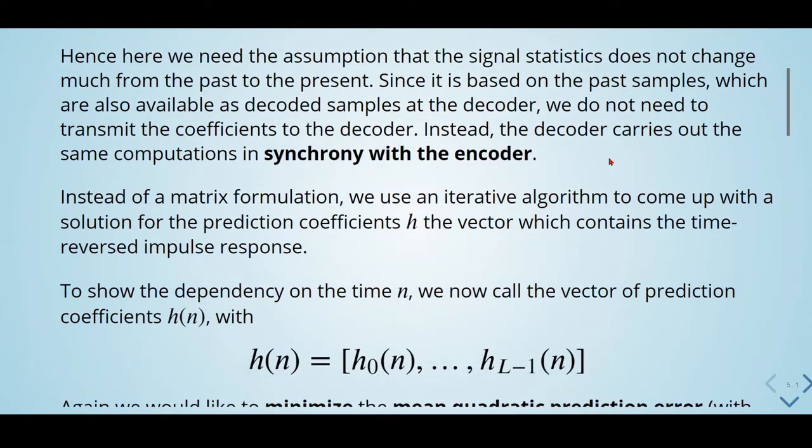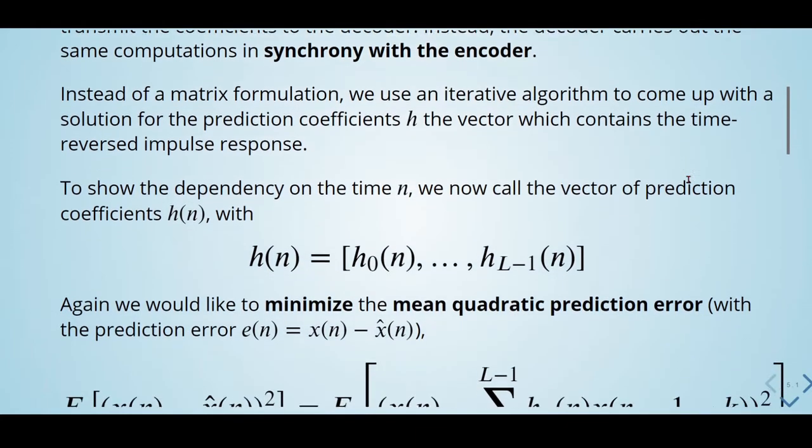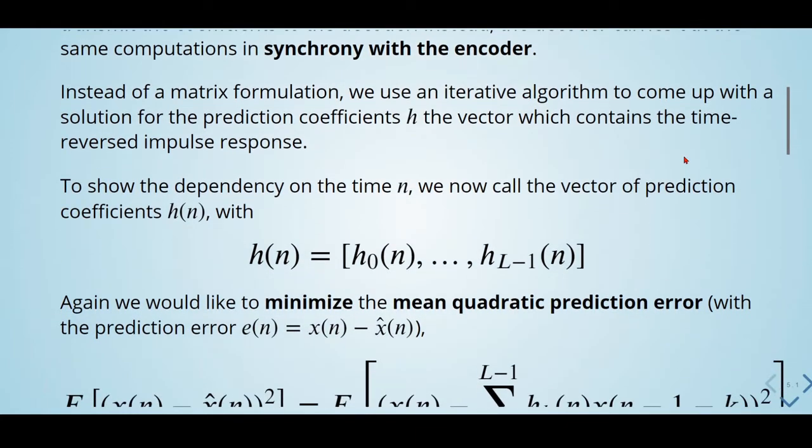Instead of a matrix formulation, we use an iterative algorithm to come up with a solution for the prediction coefficients h, the vector which contains the time-reversed impulse response. To show the dependency on the time n, we now call the vector of prediction coefficients h(n).